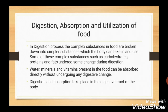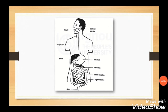Digestion, absorption and utilization of food. In the digestion process, complex substances in food — carbohydrates, proteins and fats — are broken down into simpler substances so that the body can take in and use them. However, water, minerals and vitamins can be absorbed directly without undergoing any digestive changes. Digestion and absorption are carried out in the digestive tract, which begins from the mouth, has a tube-like esophagus connecting mouth and stomach, a bag-like stomach opening into the small intestine, and the small intestine opening into the large intestine, which ends at the anus opening to the exterior.